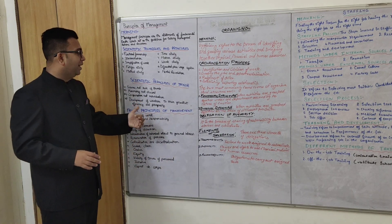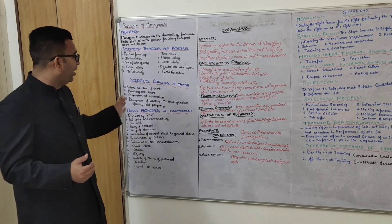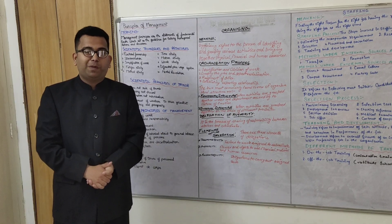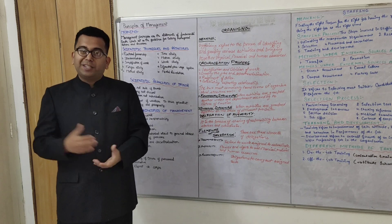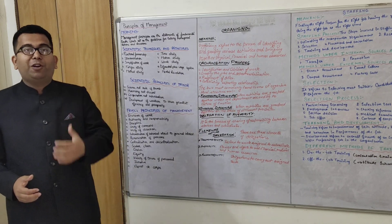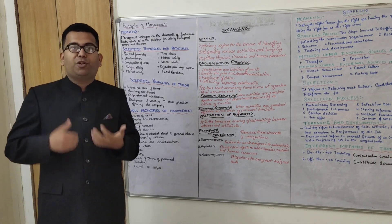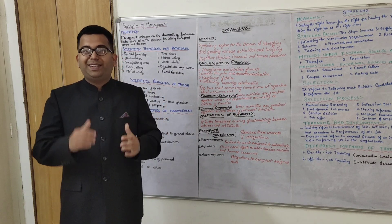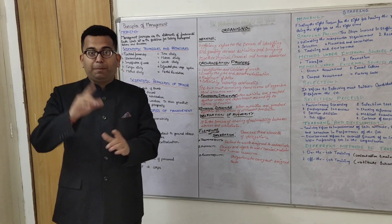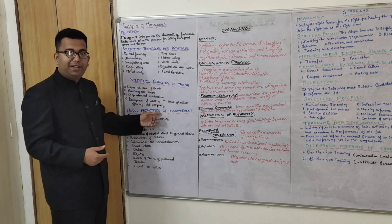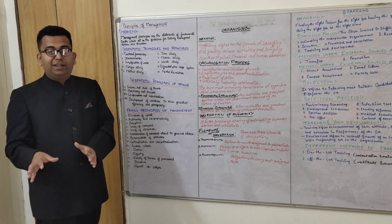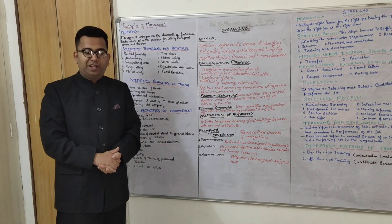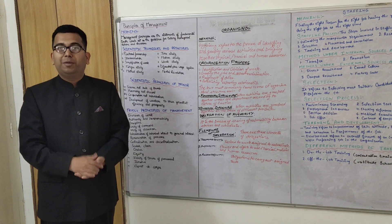Last but not the least — development of workers to the greatest efficiency and prosperity. Like Lord Hanuman forgot all his powers until someone reminded him, similarly we should make employees realize they should perform to the best of their abilities. Provide them proper training and development programs so they enrich their skills and perform to the best of their ability. These were the four principles of Taylor, who is the father of scientific management. Now coming on to Fayol — Frederick Winslow Taylor — actually Fayol is the father of management principles, and he has 14 principles.